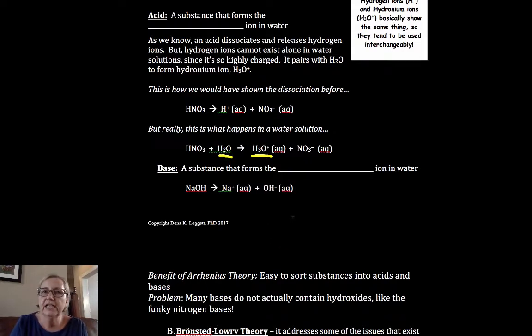A base in Arrhenius theory is a substance that dissociates to form the hydroxide ion. I've seen this defined in ways that make it very difficult to distinguish Arrhenius from our next theory, which is called the Bronsted-Lowry theory. So I'm going to focus on that hydroxide ion. An Arrhenius base would have that hydroxide ion explicitly in its formula.